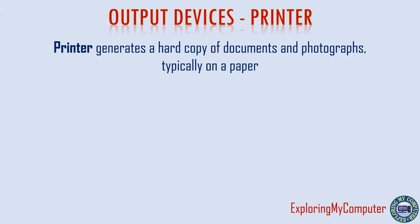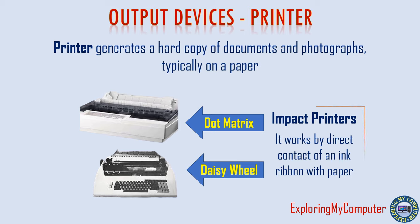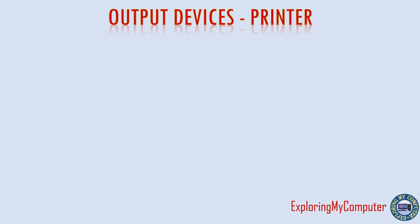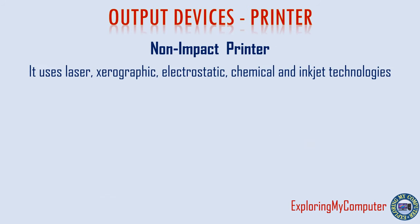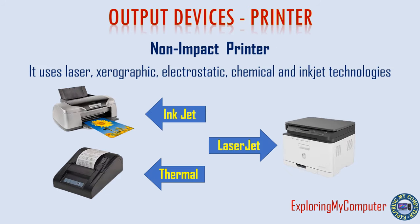The printer generates a hard copy of documents and photographs, typically on paper. Impact printers work by direct contact of an ink ribbon with paper. Non-impact printers use laser, xerographic, electrostatic, chemical and inkjet technologies.